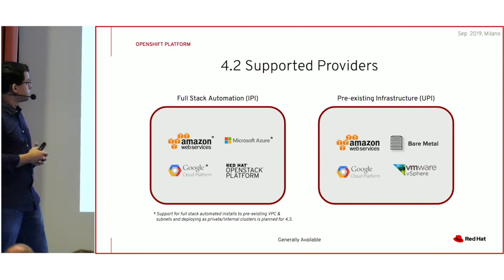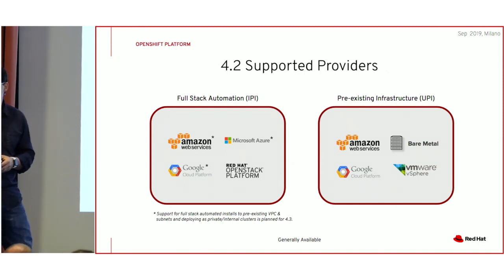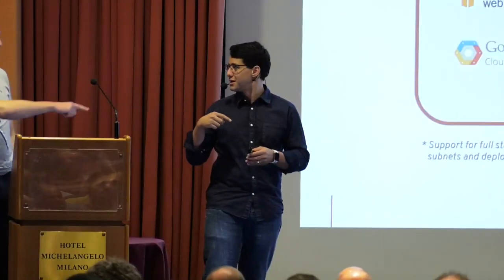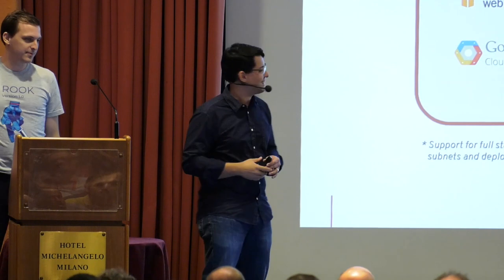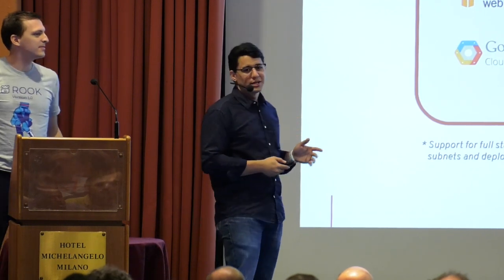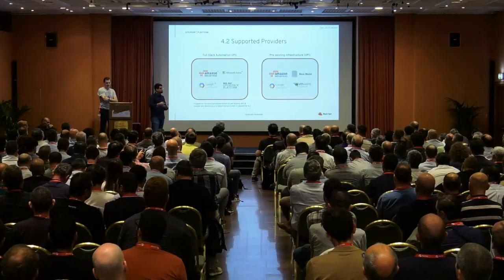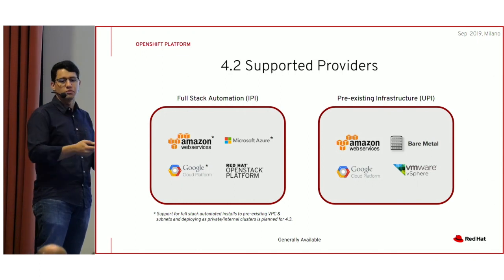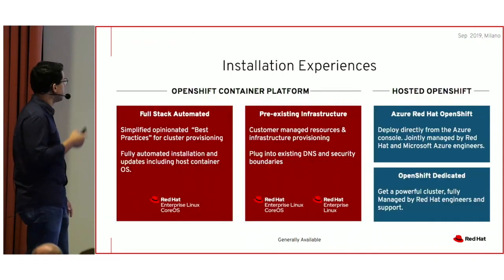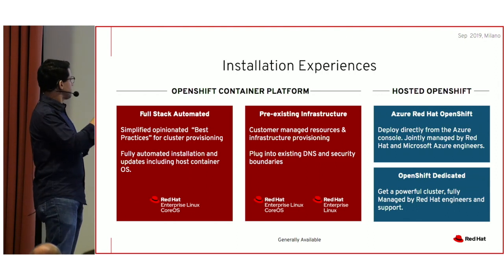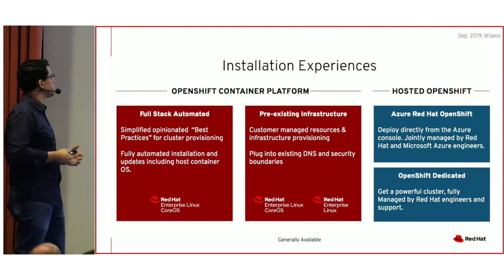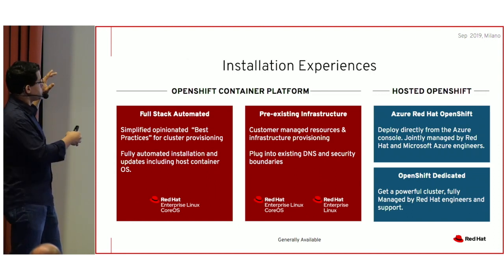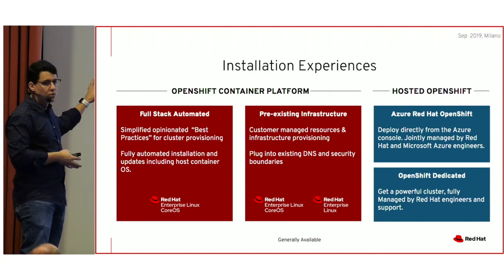As an alternative, you can use UPI — user provided infrastructure — where you are on the hook to provide the infrastructure, networking, and operating system. You just use the installer to install the OpenShift bits on top of that infrastructure. To summarize, on the OCP side we have a fully automated install, the pre-existing install, and also hosted offerings in two flavors.